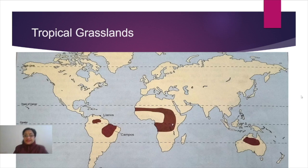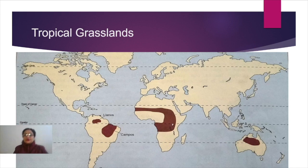In Australia, the tropical grasslands cover the main area of two territories: the Northern Territory and Queensland. These are the two territories which have tropical grasslands.